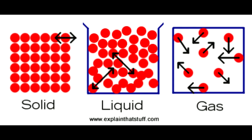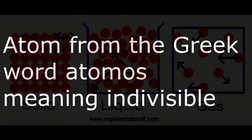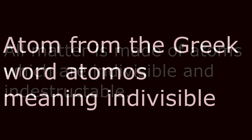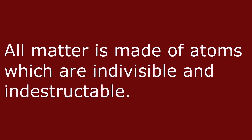In it, he proposed that gases, liquids, and solids — all substances — were made up of tiny, unimaginably small particles he called atoms. He claimed that the atoms of a given element were identical in all ways. His new model contained four basic points. First, that all matter is made of atoms which are indivisible and indestructible.